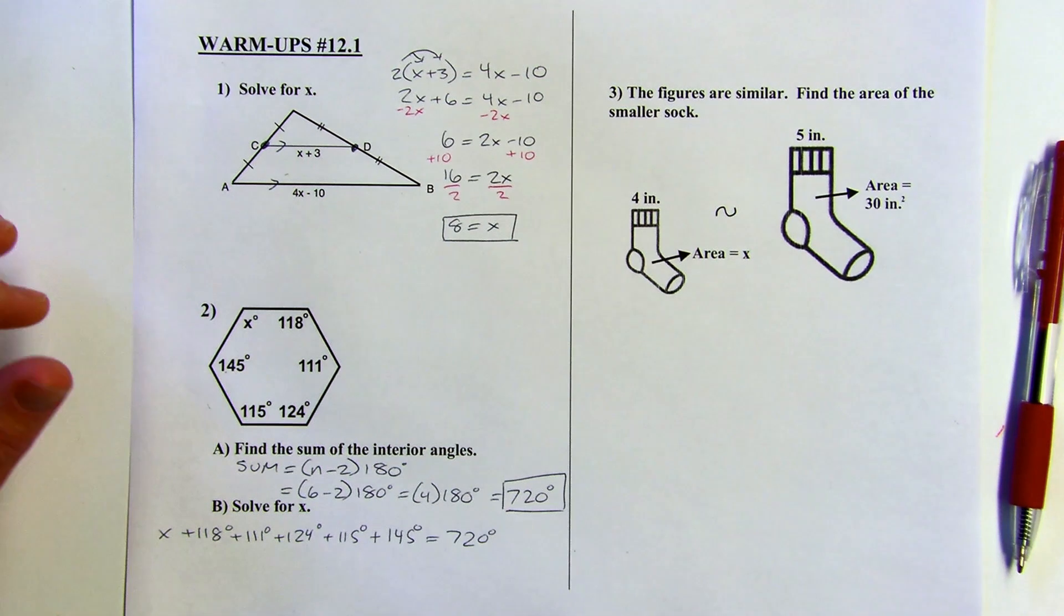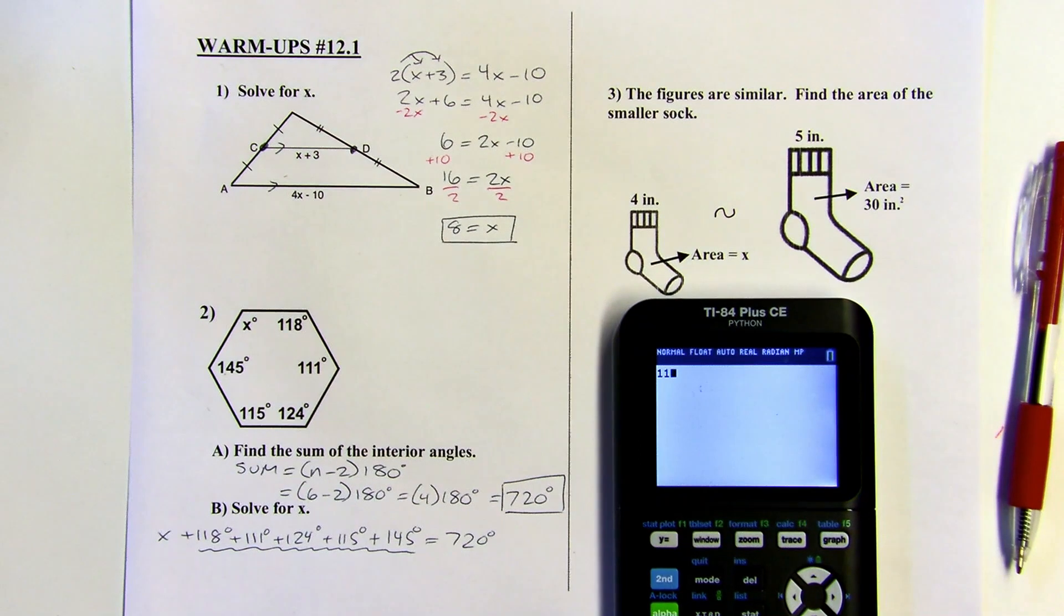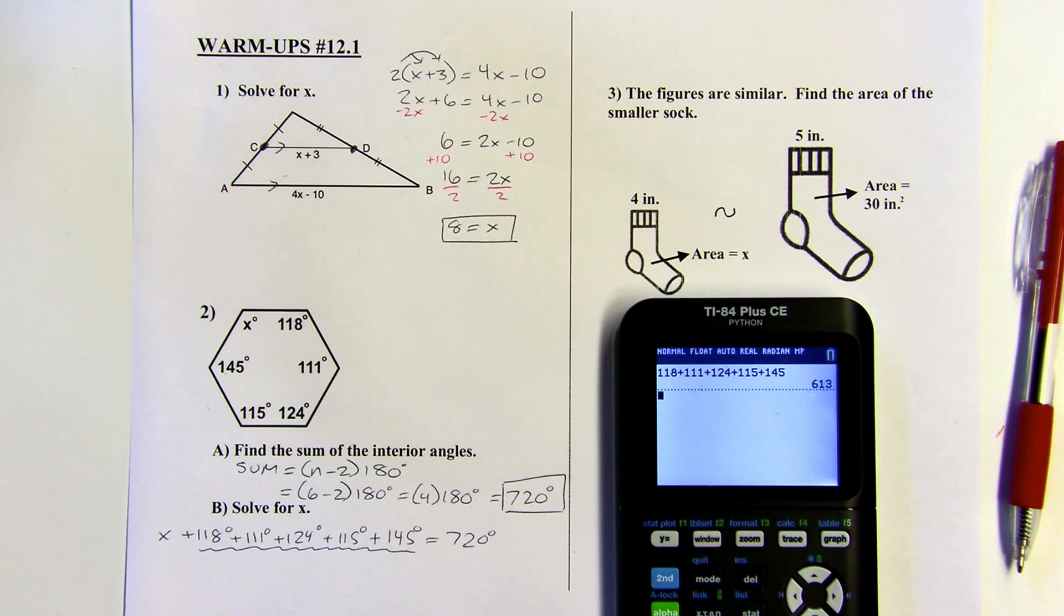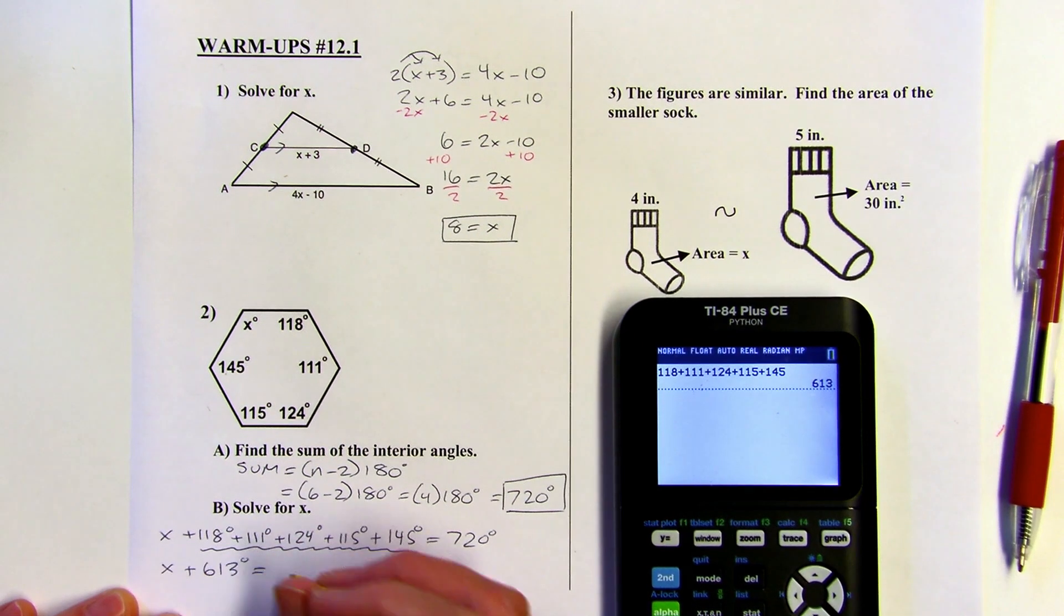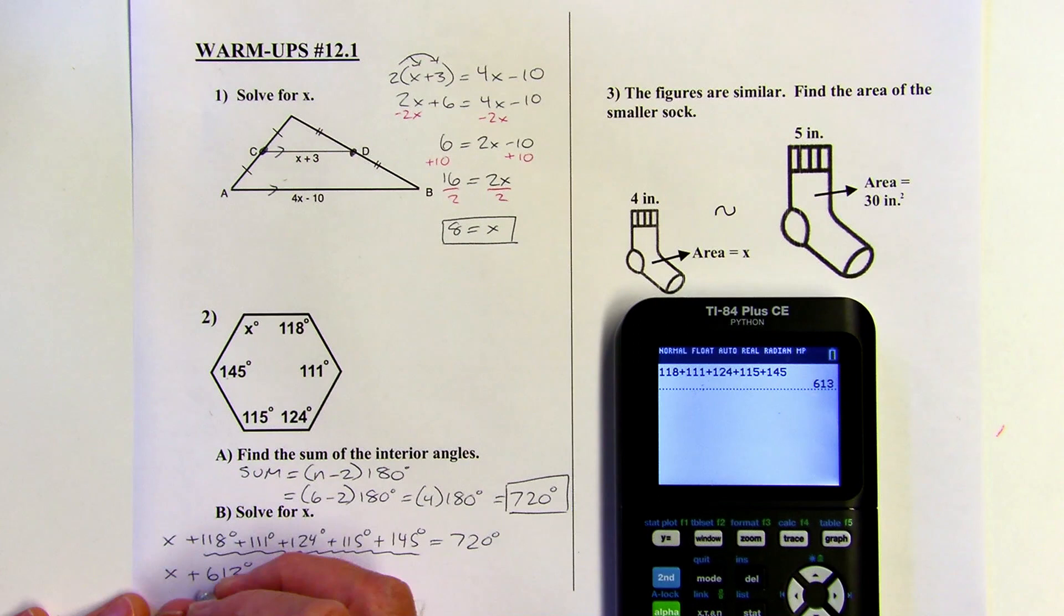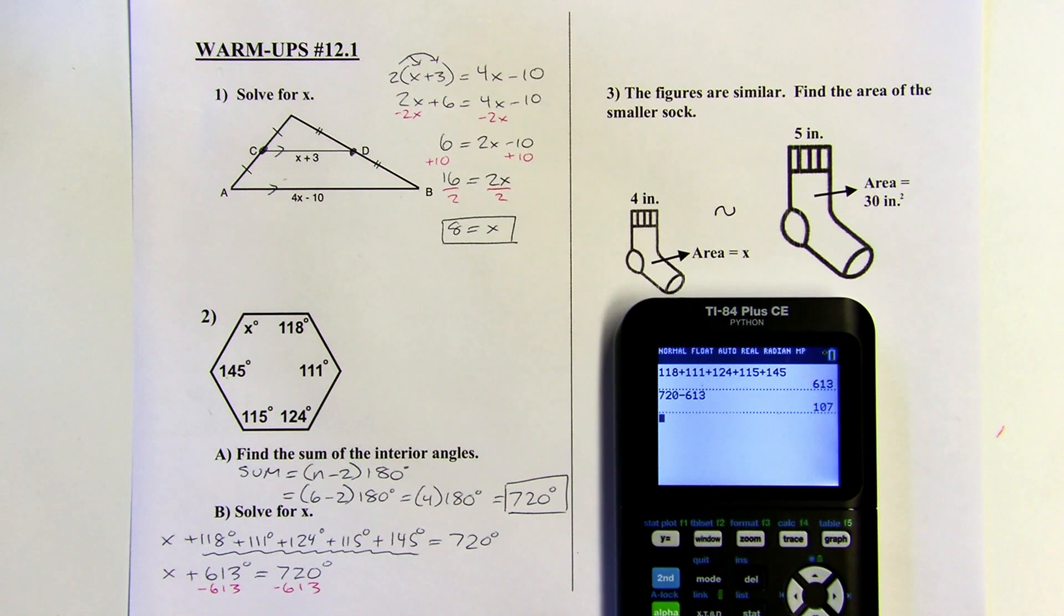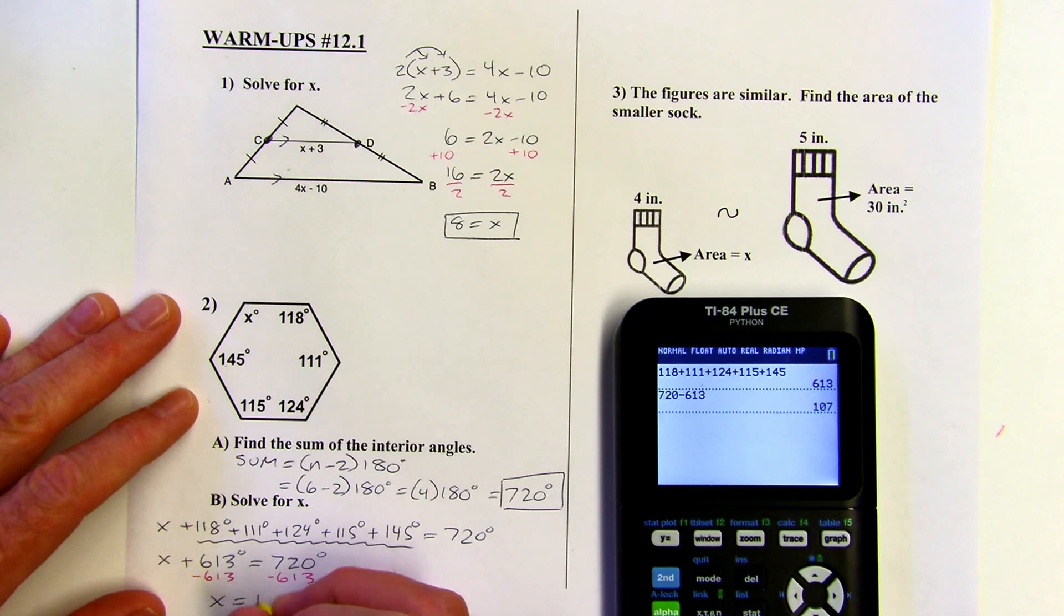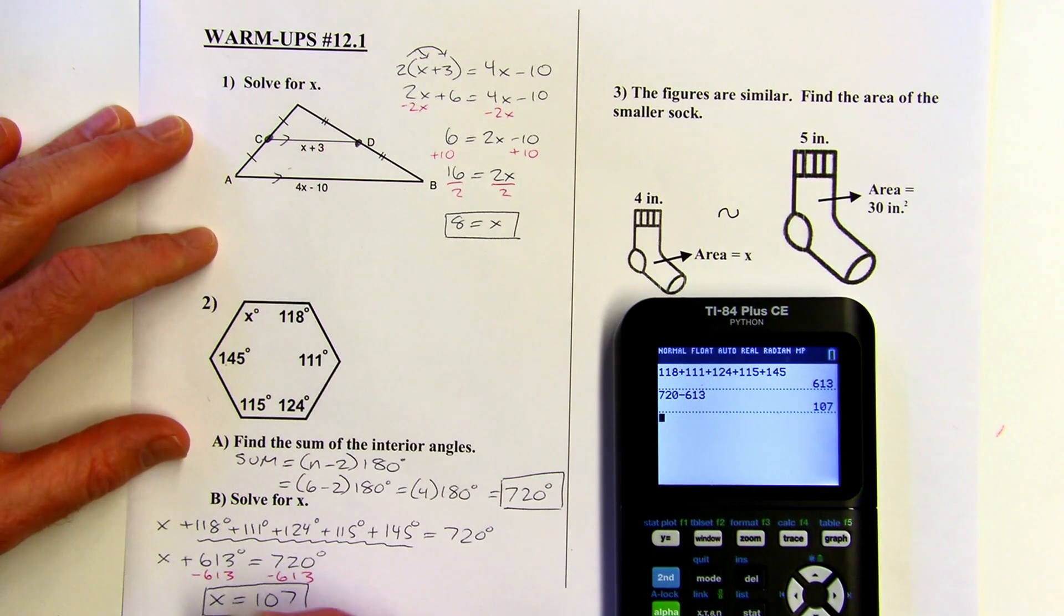All right. So now I'm going to combine all of these on the left side. So just to make that quick, I'll use my calculator here. So on the left, all of those add up to 613. And then the last step would be to solve for X by subtracting 613 from both sides. So 720 minus 613 puts me at 107. For my final answer here, I'm not going to put the degree symbol in because I'm just saying what number I could plug in there. It already has the degree symbol. So that's a technicality, but it's 107.